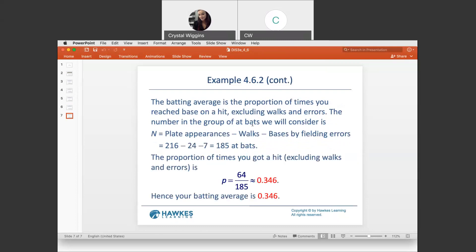We know that N is the plate appearances minus the walks minus the bases by field errors, which gives us 185 at-bats. The proportion of times that you got a hit, excluding walks and errors, was 64 out of the 185, which is 0.346.